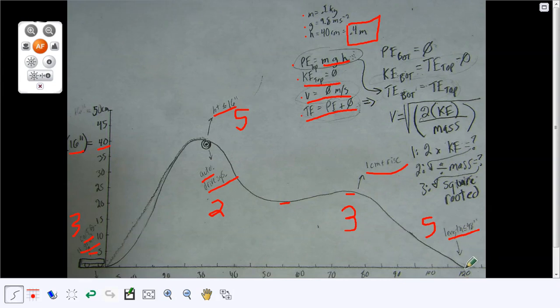Now at the bottom, all of that has turned into kinetic energy. Your kinetic energy equals the total energy at the top minus the potential energy at the bottom. There isn't any potential energy at the bottom because it's zero times something else. So your kinetic energy equals your total energy at the top.